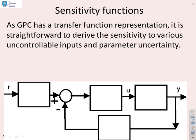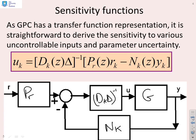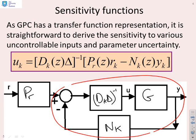Let's look at some sensitivity functions. This was the GPC controller — we had a DK delta inverse in there, we had the system G here, we had an NK here, and the feedforward PR doesn't actually affect loop sensitivity. But the key thing is, because I can write down a simple block diagram, it should be straightforward now to analyse the impact of different types of uncertainty.